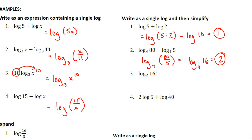For this one, I want to take that 2 and park it in front of that logarithm using the power rule. Now you might recognize log base 2 of 16 would be 4, because 2 to the 4th power is 16. So, we would have 2 times 4, which gives us 8.